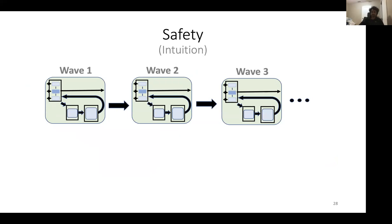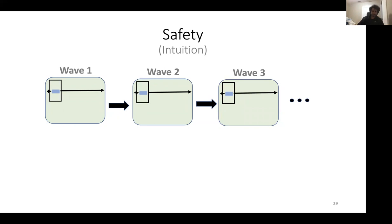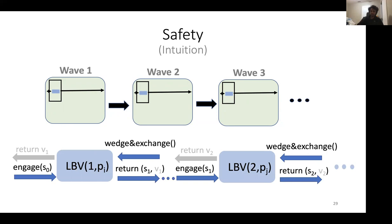For safety intuition: if we forget about the leader election abstraction, the barrier abstraction, and all the LBVs that were not elected, what we are left with is a proper execution of LBVs. The safety of our protocol therefore comes directly from the safety of the original protocol used to instantiate the LBV abstraction — we get safety for free.